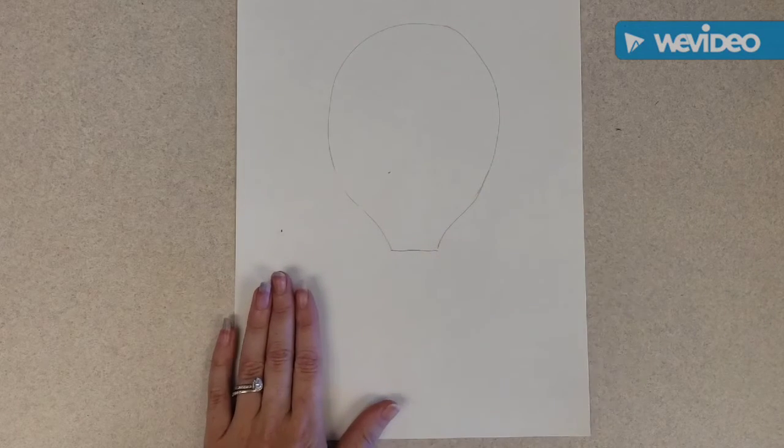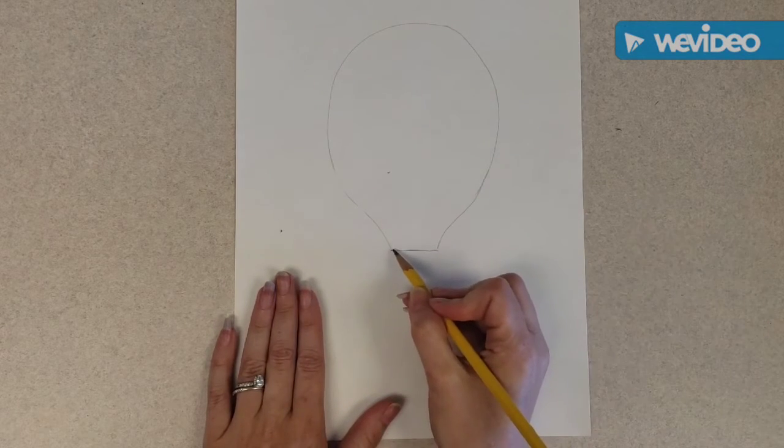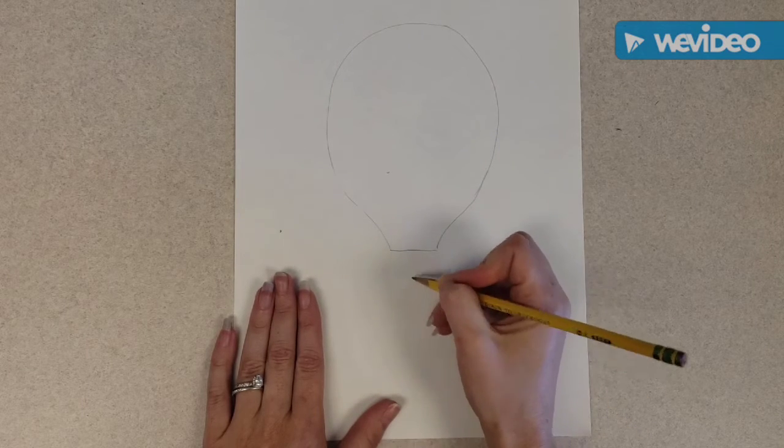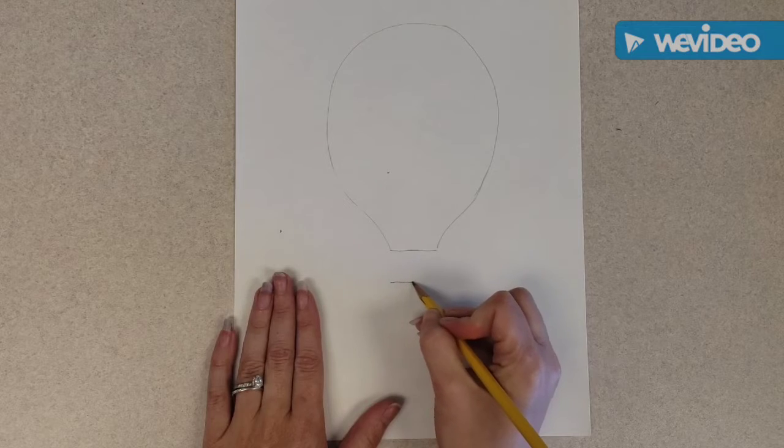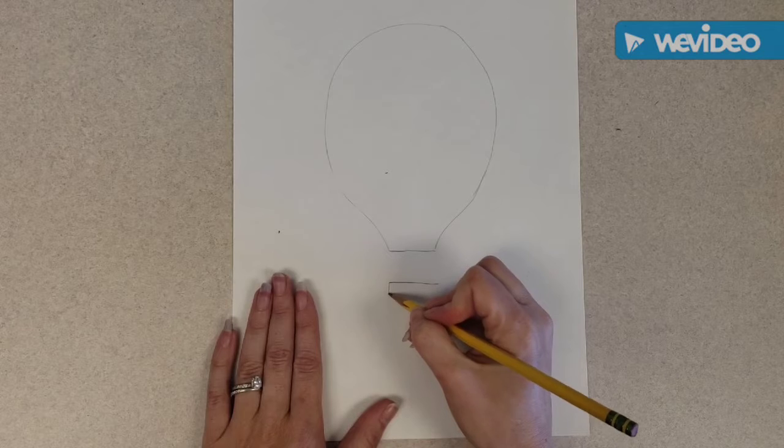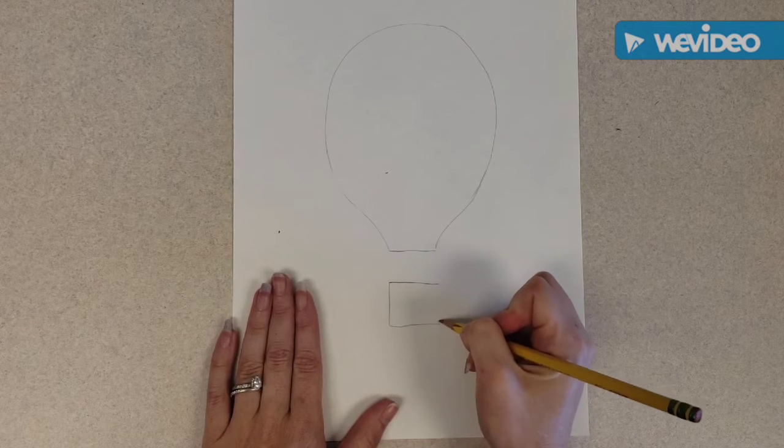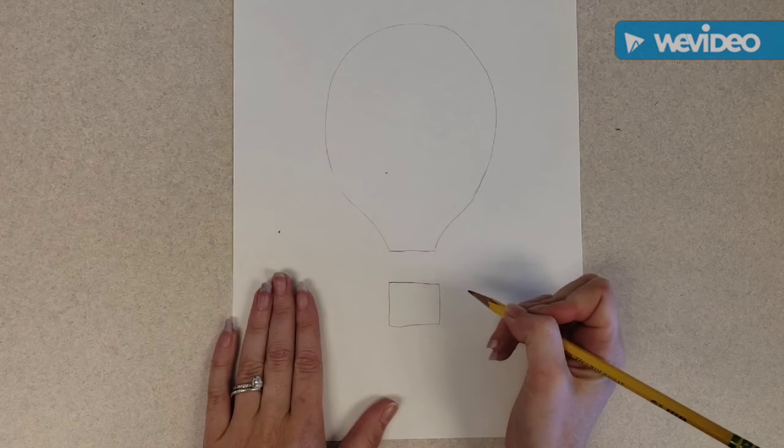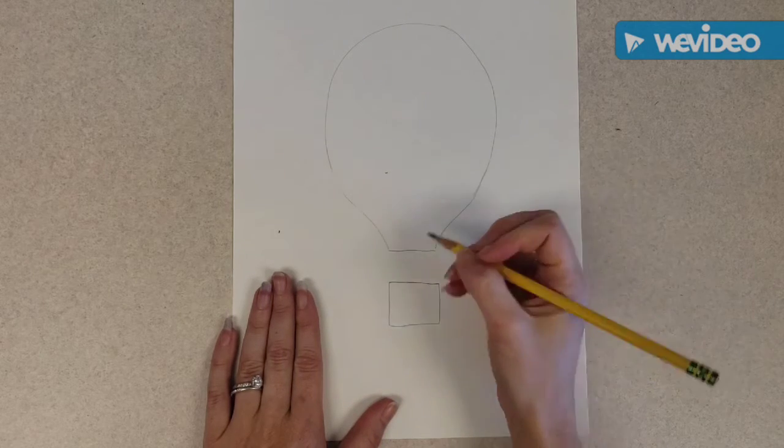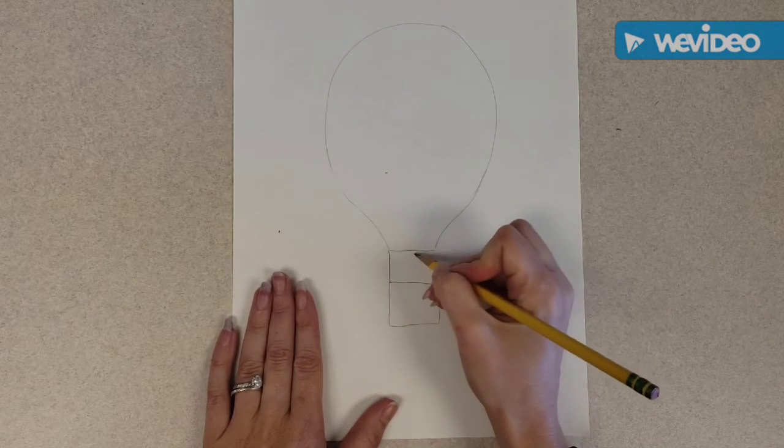And then we're going to add a basket for somebody to stand in. So a little bit down from the bottom of your hot air balloon because they need space to stand up. You're going to draw a parallel line or a line that is even. Then just turn that into a square and we need some strings to attach our basket to our hot air balloon. So we're going to add those strings.